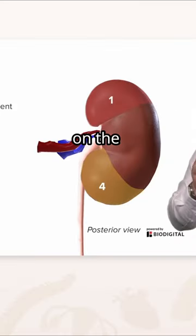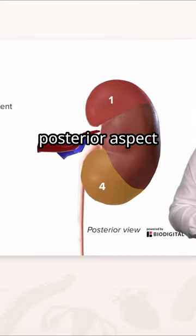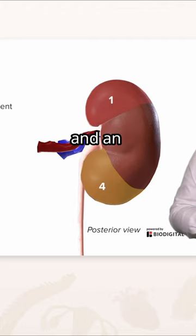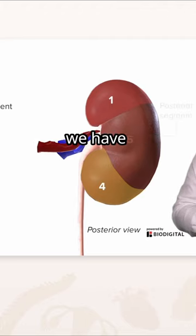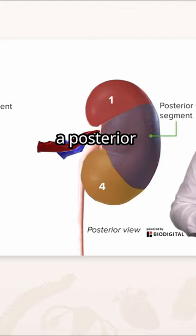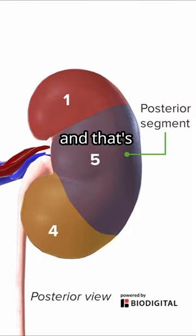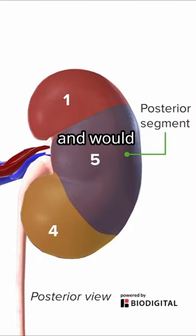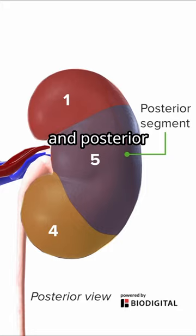Also on the posterior aspect, where you saw an anterior superior and an anterior inferior, we have a posterior segment. That's where the kidney has been separated in half down the coronal plane, and we'd have both segments — anterior and posterior — in that division.